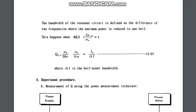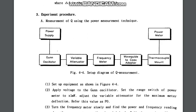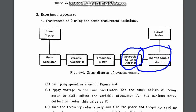Now for the experimental procedure for measuring Q using power measurement techniques. We need to know the frequency and obtain the value of Q. The equipment includes a power supply, gun oscillator, variable attenuator, and frequency meter — these are the most common components in the microwave input section. There is also a waveguide-to-coaxial adapter and a thermocouple mount to measure power.